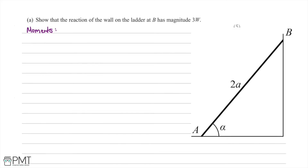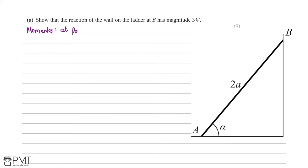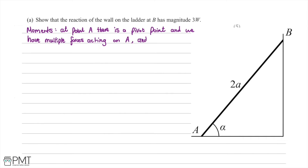Here we're dealing with moments. We know that at point A we have a pivot point. There are multiple forces acting in various directions but they are all in equilibrium since there is no movement. So writing this down: at point A we have a pivot point, and all forces are in equilibrium since there is no movement.